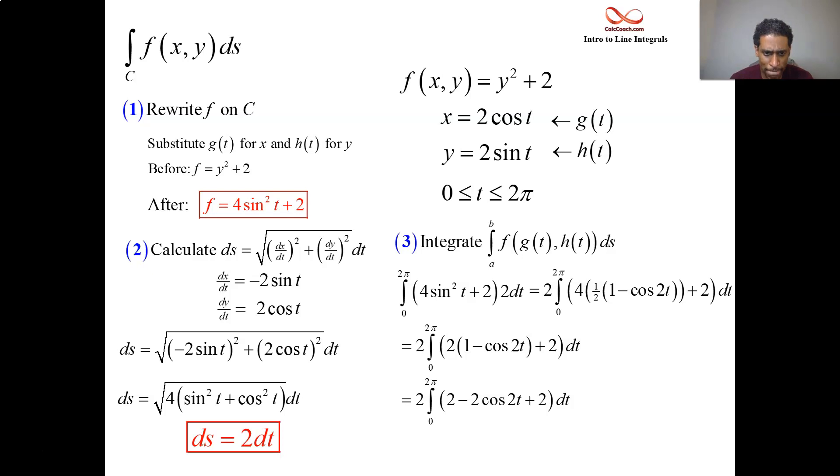And then we're going to integrate or distribute and then put the two 2s together. Integrate, we get 4t and then the antiderivative of negative 2 cosine 2t is sine 2t. 2 from the outside, put a 2π in, put a 0 in. 0 gives you 0. The 2π gives you 0 for the sine part, but not for the first part.